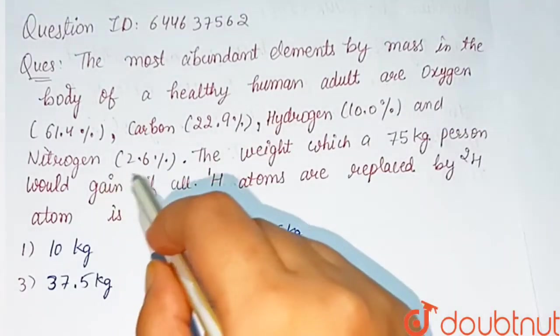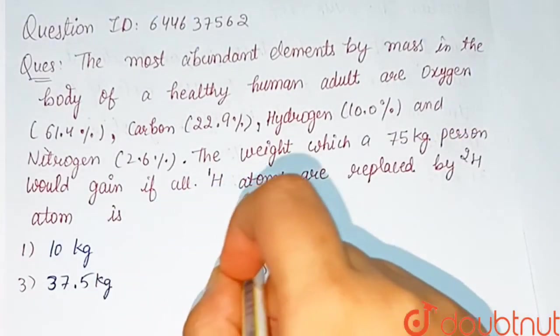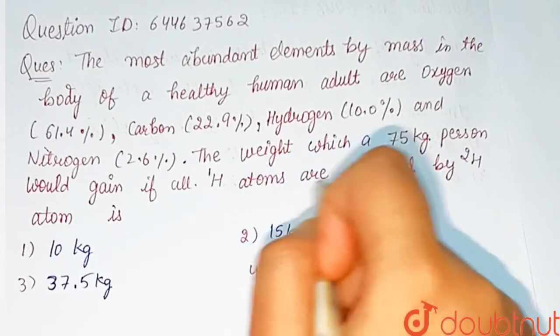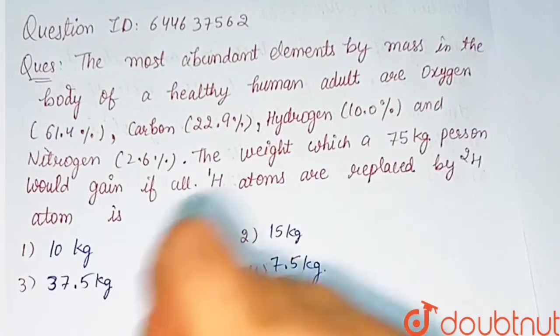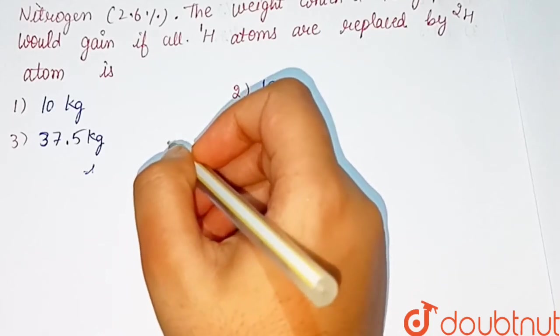and nitrogen 2.6%. The weight which a 75 kg person would gain if all H1 atoms are replaced by H2 atoms. Note that these are two isotopes: H1 and H2, isotopes of hydrogen.